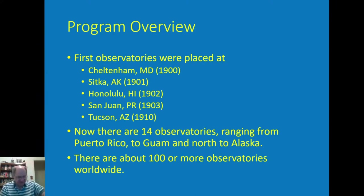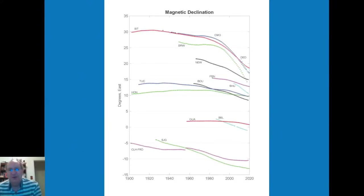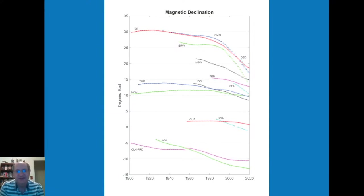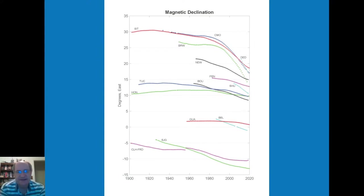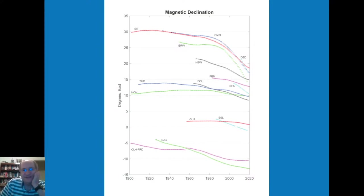Every country has its own agency that takes care of this. Some countries such as China and Russia may have multiple agencies, which means they may have differing standards, which drives some people nuts. To give you an idea of what kind of data record we have, this is a plot of the declination going back to the start. Cheltenham was replaced in the mid-1950s by Fredericksburg, Virginia, because the Maryland site was getting too noisy. There's a gap in the BSL data — Stennis Space Center in southern Mississippi — due to Hurricane Katrina.